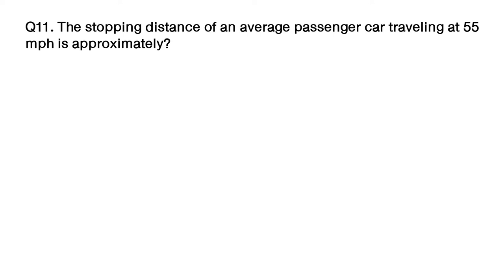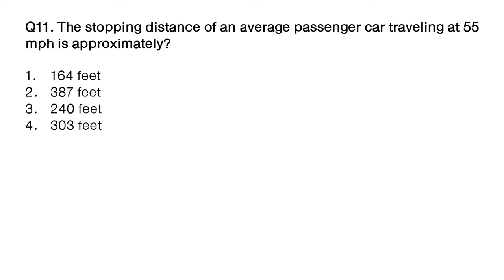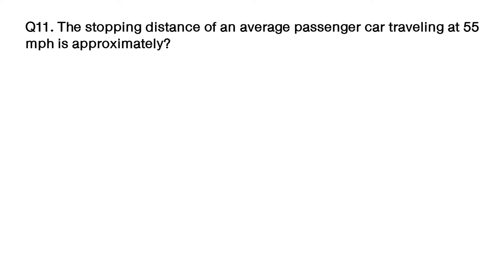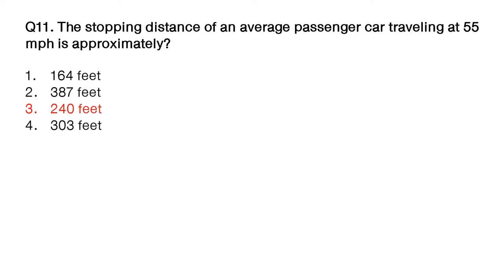Question: the stopping distance of an average passenger car traveling at 55 miles per hour is approximately? Option number 1: 164 feet. Option number 2: 387 feet. Option number 3: 240 feet. Option number 4: 303 feet. The answer is option number 3: 240 feet.